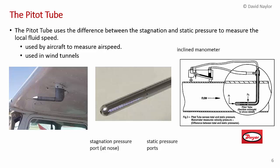One of the reasons I'm telling you about stagnation pressure and static pressure is because it has a very useful application to an instrument called a pitot tube. And I've shown a picture here of a pitot tube. I think that's on the wing of a Cessna, but they're also used on large jet aircraft to measure the wind speed.